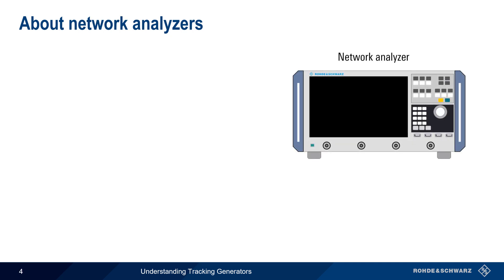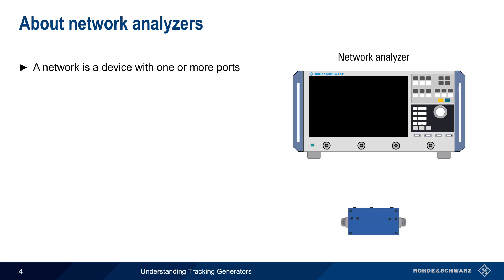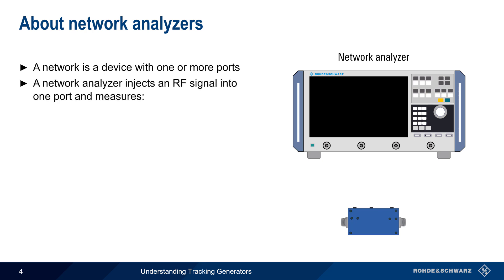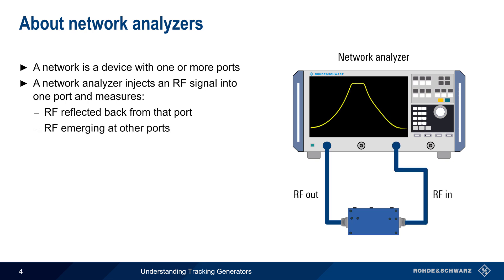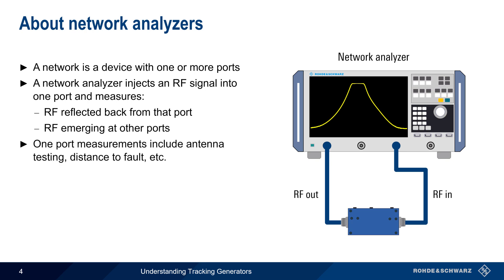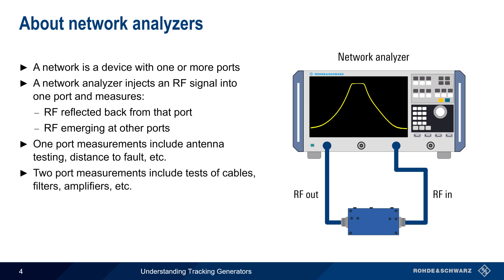Another common radiofrequency measurement instrument is a network analyzer. A network is a device with one or more ports that can absorb, pass, or reflect radiofrequency energy. A filter is a good example of a two-port network. Network analyzers usually have multiple inputs, and they perform measurements by injecting a signal into one port, then measuring the signal reflected back from that port and/or the signal emerging from the other ports. Common one-port applications include antenna testing or distance-to-fault measurements. Common two-port applications include characterizing cables, filters, amplifiers, etc.